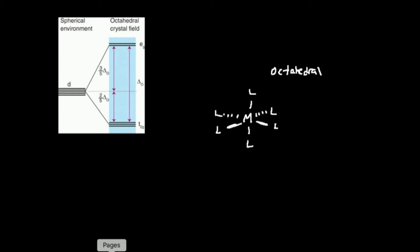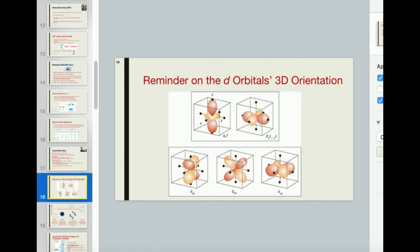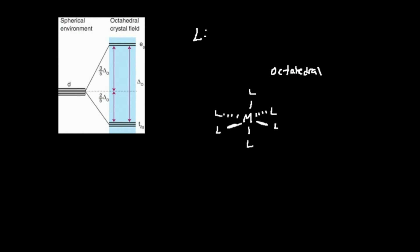The ligands, as we hopefully know, have a lone pair on them that's going to be the donor lone pair. This lone pair is going to interact with the metal. One thing to keep in mind: this lone pair on each of these ligands has a negative charge. Each electron has a minus charge — electrons are negatively charged. This lone pair is coming from the ligand.